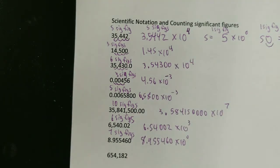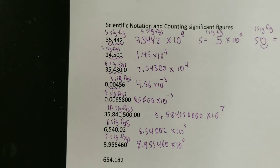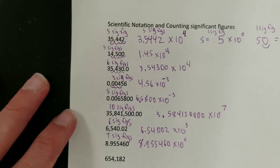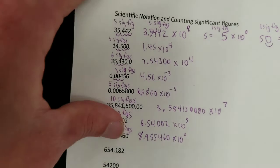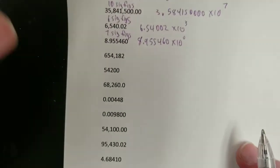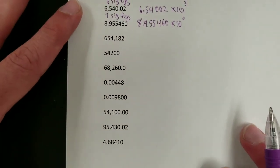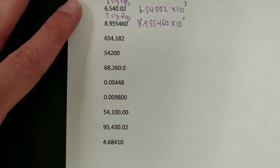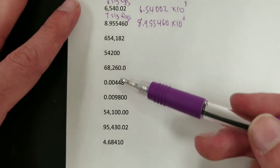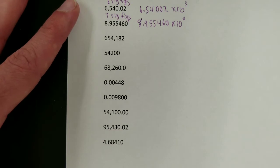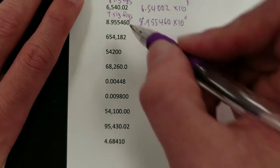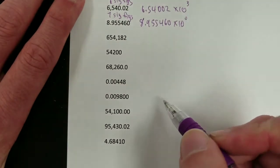So that's an overview of the kinds of numbers you could possibly run into, both for counting how many sig figs they have and converting to scientific notation. I would suggest, the viewer, try these out — count how many sig figs and convert to scientific notation. I'm going to solve these all out right now, and then you can fast forward to the end to see how your answers agree. I'll do the sig figs first, and then the scientific notation.